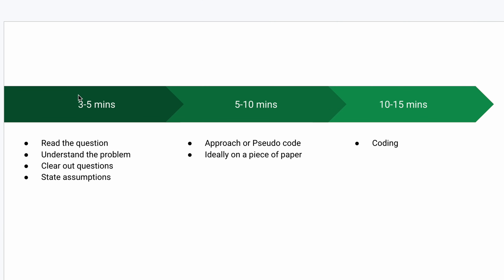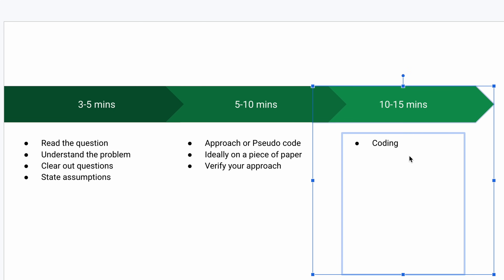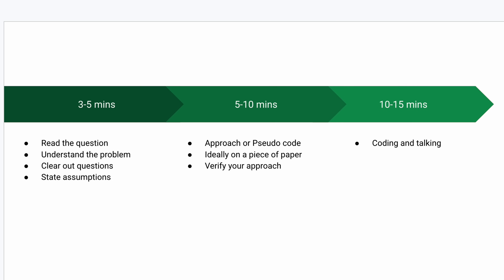When giving your DSA interview, divide your time carefully. The first three to five minutes should go into reading the question, understanding the problem, and clearing out any questions. The next five to ten minutes should be thinking about the approach at a high level — the pseudocode you'll implement. After that, ten to fifteen minutes for coding — but before coding, always verify your approach with the interviewer first.